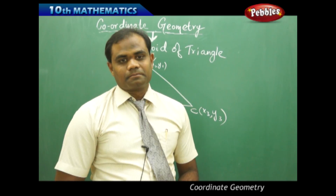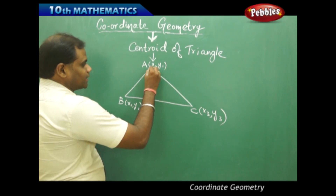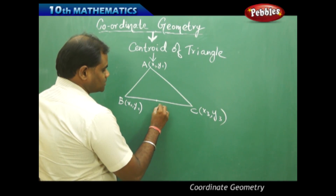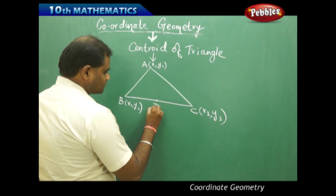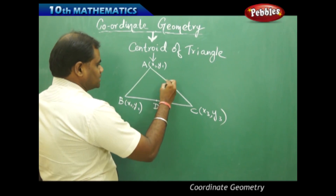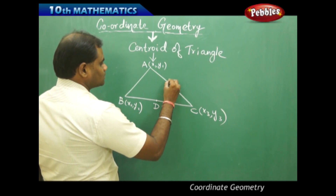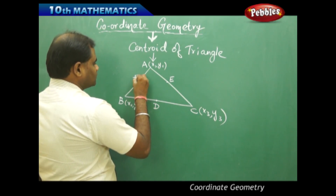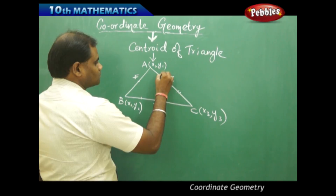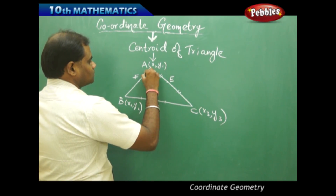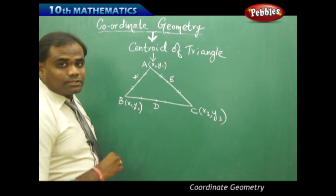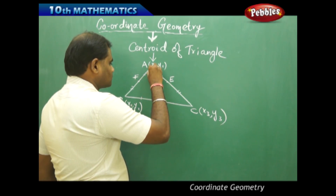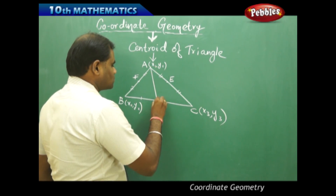What is a median? The line joining a vertex to the midpoint of the opposite side. For example, D is the midpoint on BC, E is the midpoint on AC, and F is the midpoint on AB. If I join a vertex to its opposite midpoint, that line is called a median.